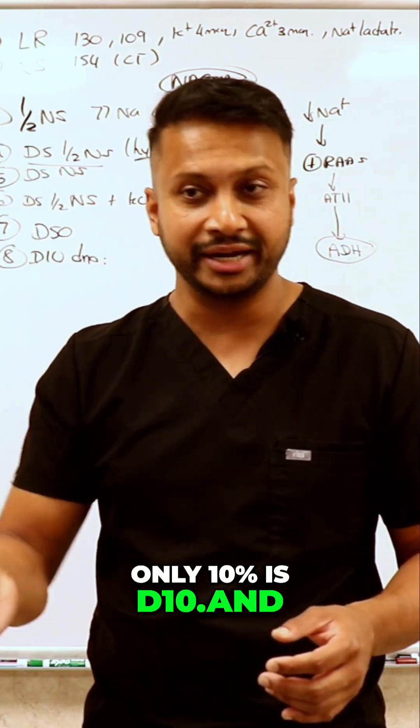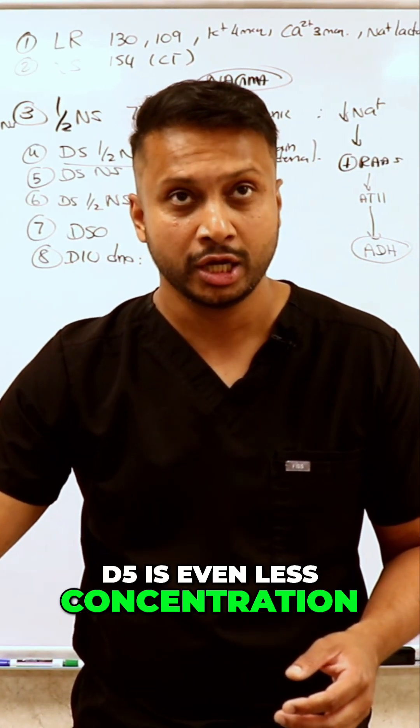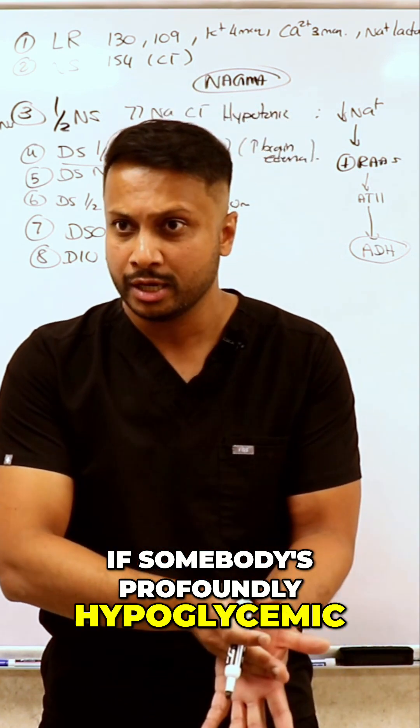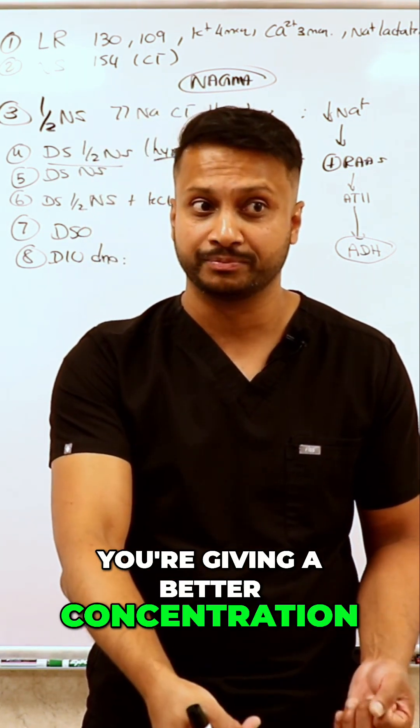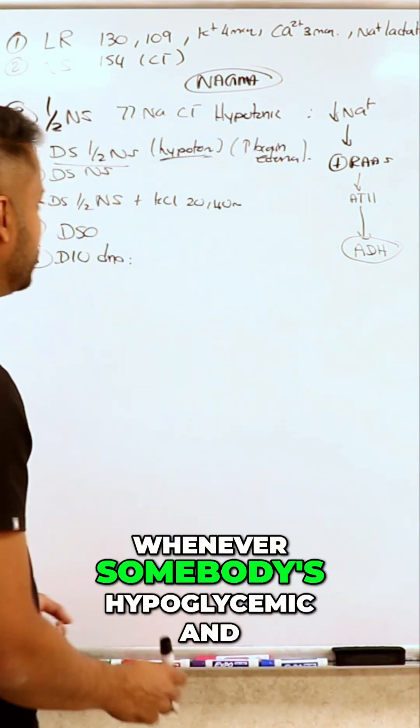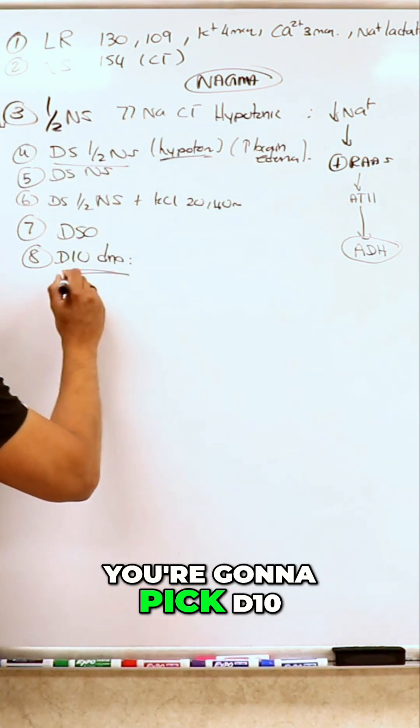D5 is even less concentration. So if somebody's profoundly hypoglycemic, is D10 better or D5 better? D10 is better because you're giving a better concentration. D5 is much less. So whenever somebody's hypoglycemic and you want to start a drip, you're going to pick D10.